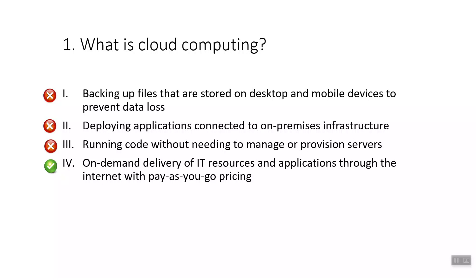The first option says backing up files stored on desktop and mobile devices to prevent data loss. We can backup files to the cloud, but this doesn't describe cloud computing. The second option, deploying applications connected to on-premises infrastructure, is a sample use case for hybrid cloud deployment, not the definition of cloud computing.